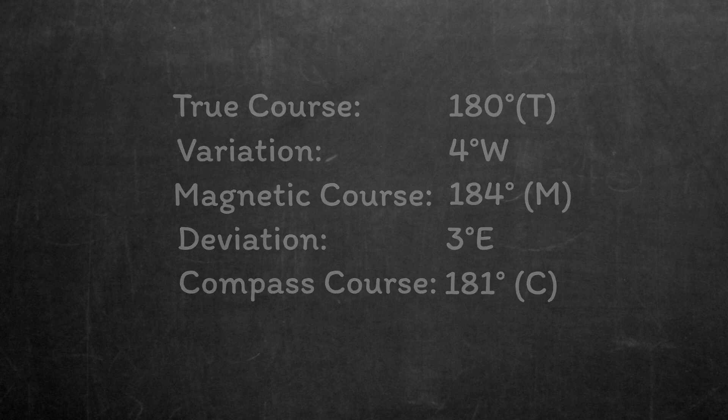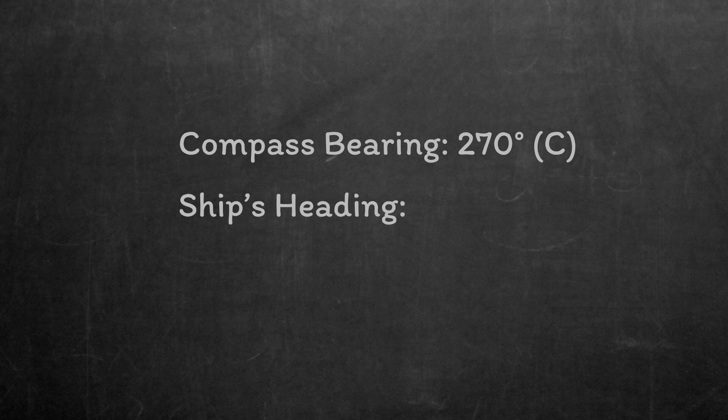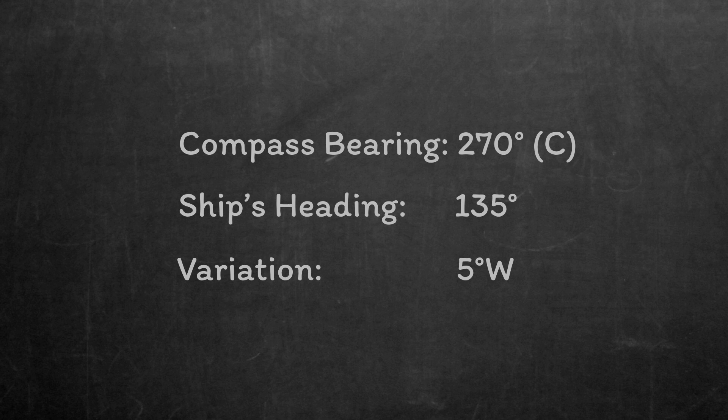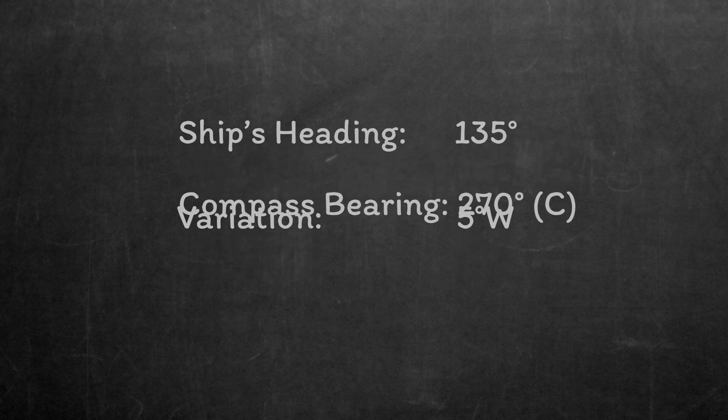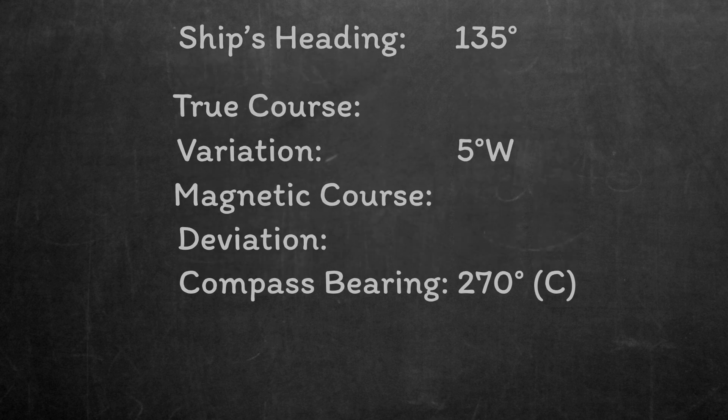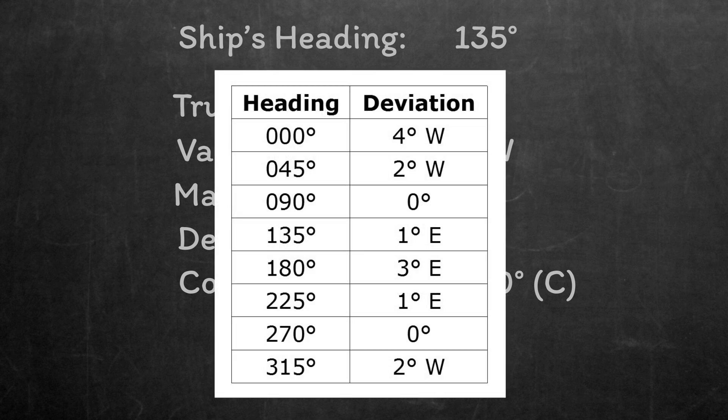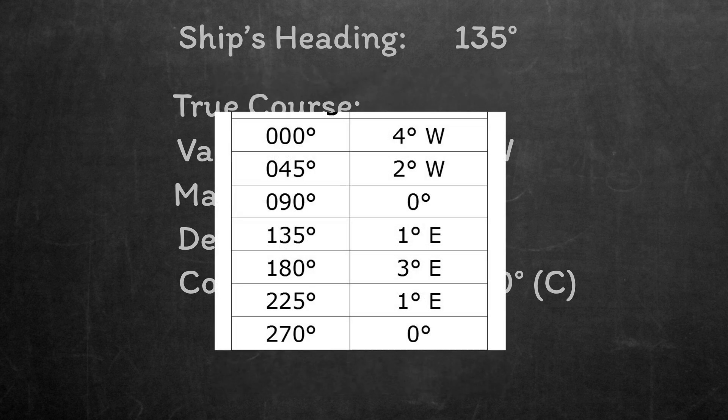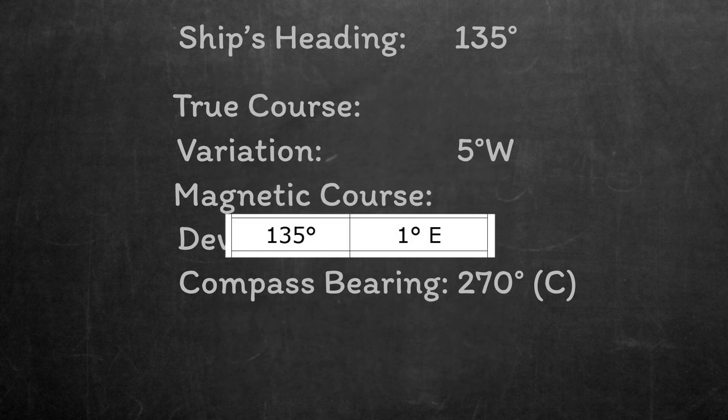And for the final example, let's do it the other way around. We measure a lighthouse bearing 270 degrees on our ship's compass. Our ship's heading is 135 degrees, and the variation from the chart is 5 degrees west. First, we construct the table with the information that we know. To find deviation, we enter the deviation card with our ship's heading, and we get a deviation of 1 degree east.